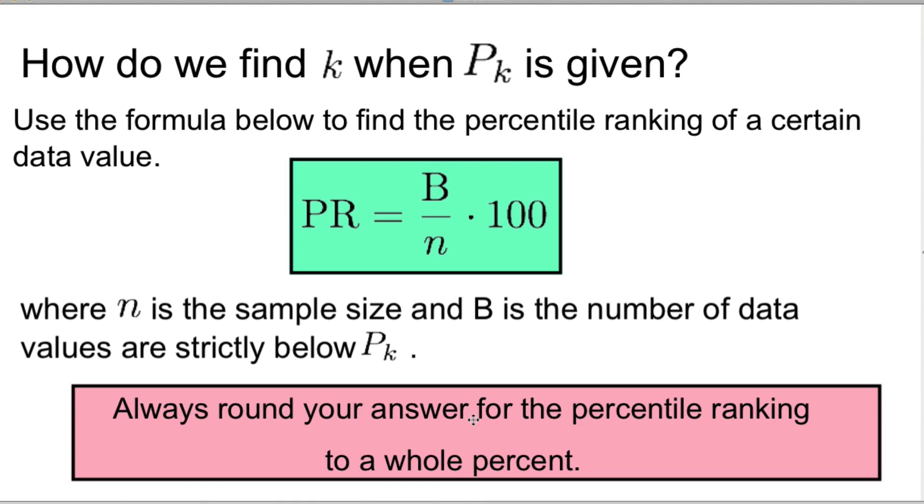equal to B over n times 100, where n is the sample size and B is the number of data values that are strictly below P_k. Again, data must be sorted. And we're always going to round the answer to the nearest whole percent.